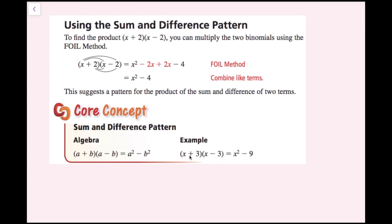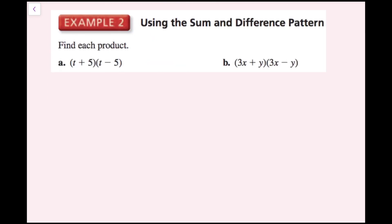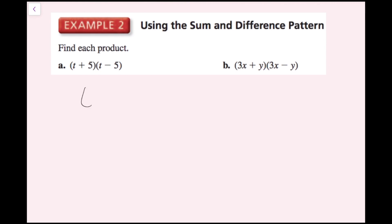For the example with x plus 3 and x minus 3, multiplying these two expressions gives x squared minus 9. For example 2, part A: I have t plus 5 times t minus 5. Using the sum and difference pattern, this simplifies to my first term squared minus my second term squared: t squared minus 5 squared, which equals t squared minus 25.